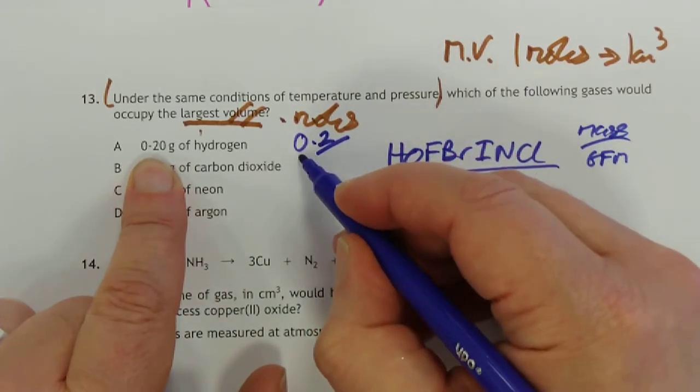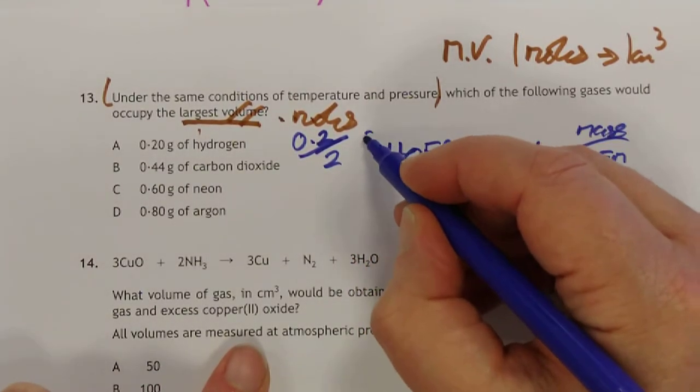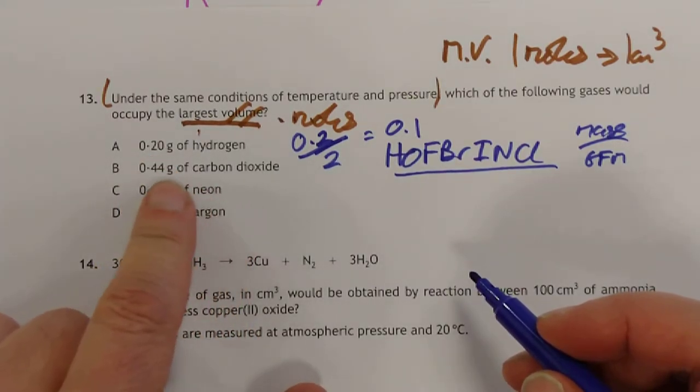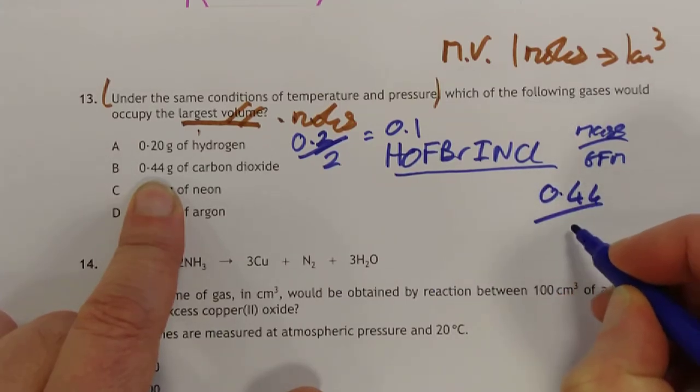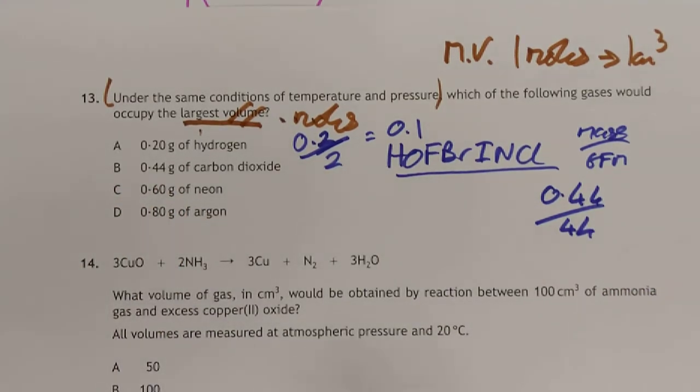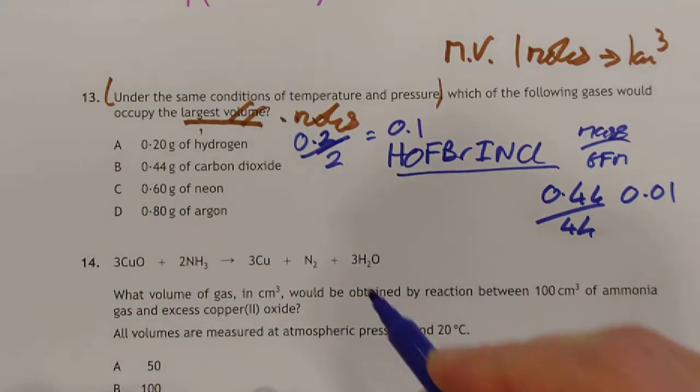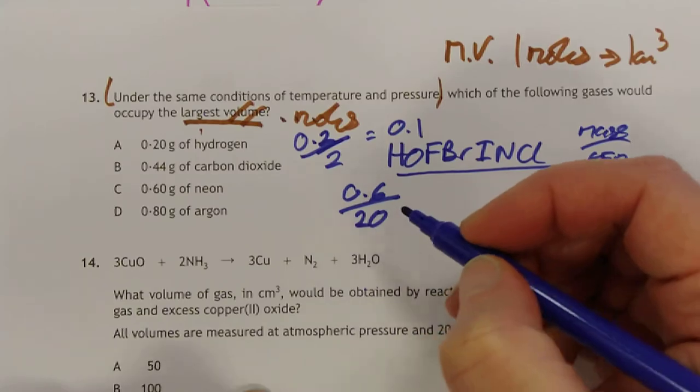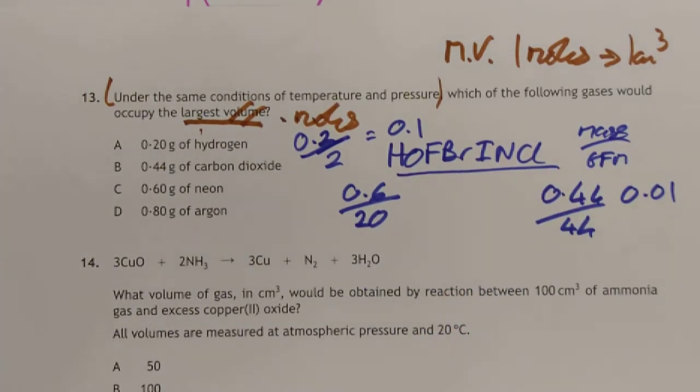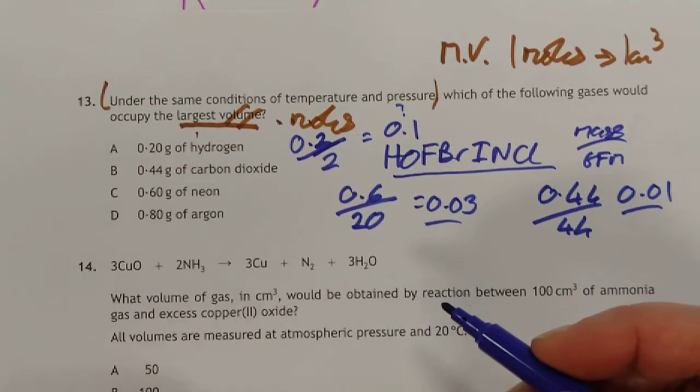So this is 0.2 for the hydrogen over 2. The answer to that is 0.1. So there's 0.1 moles of hydrogen gas. Let's do the next one. Carbon dioxide is 44, its GFM. So 0.44 over 44. That's 0.01. So that's seriously smaller than that. Let's do neon. The mass here is 0.6. And the GFM for neon is 20. So 0.6 over 20, which is 0.03.